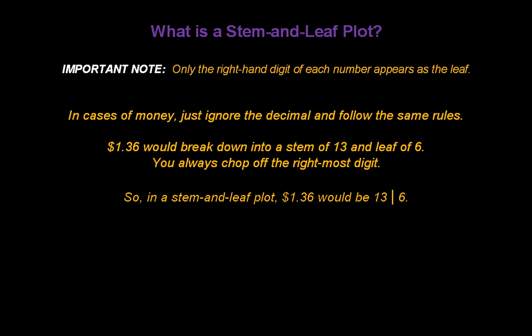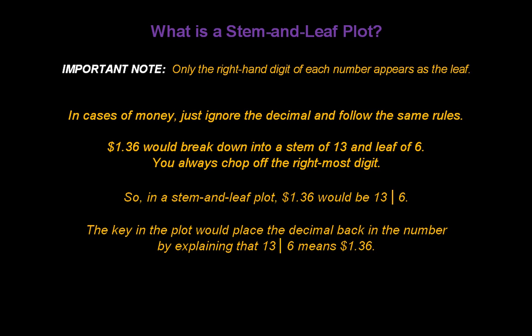So in a stem-and-leaf plot, $1.36 would be 13 vertical bar 6. The key in the plot would tell the reader to place the decimal back in the number by explaining that 13 vertical bar 6 really means $1.36.